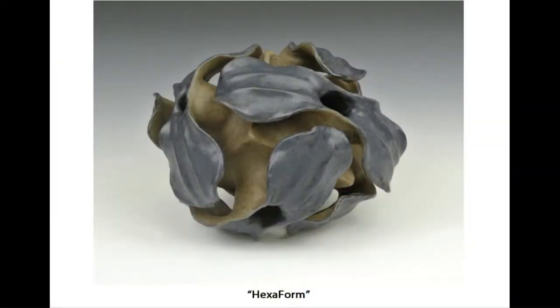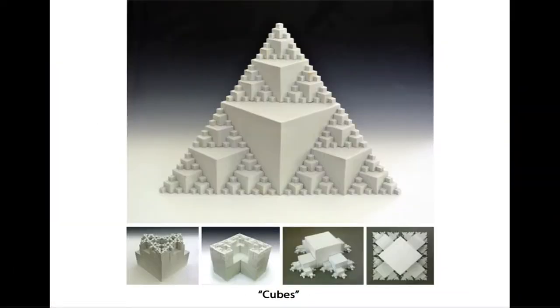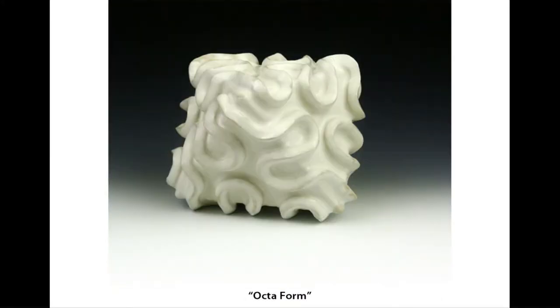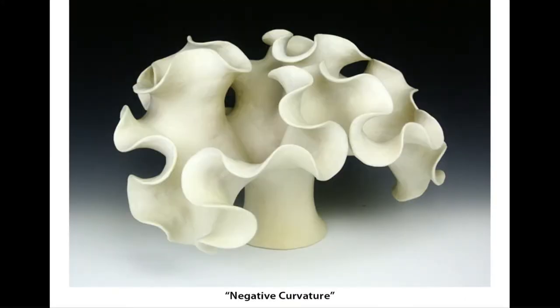13 ceramic sculptures since the last meeting. Some of these combine organic and geometric character. These are half-scaled porcelain cubes. This is a negative curvature surface based on the Sierpinski arrowhead curve.